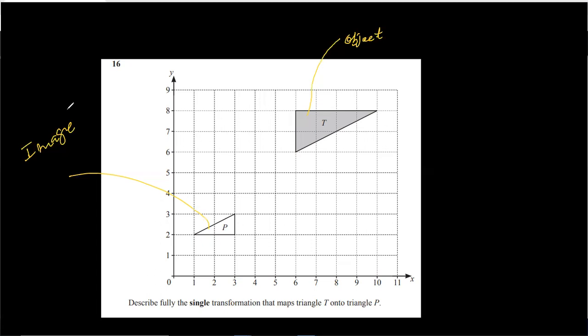So, transformation, when we describe the shape, we have the name of transformation. Because the sizes are different, so the transformation of the type is enlargement.